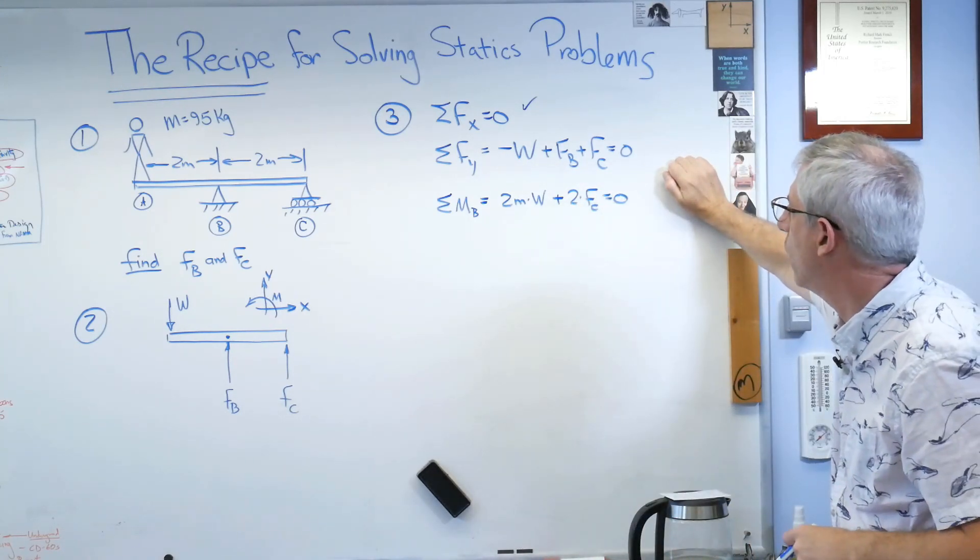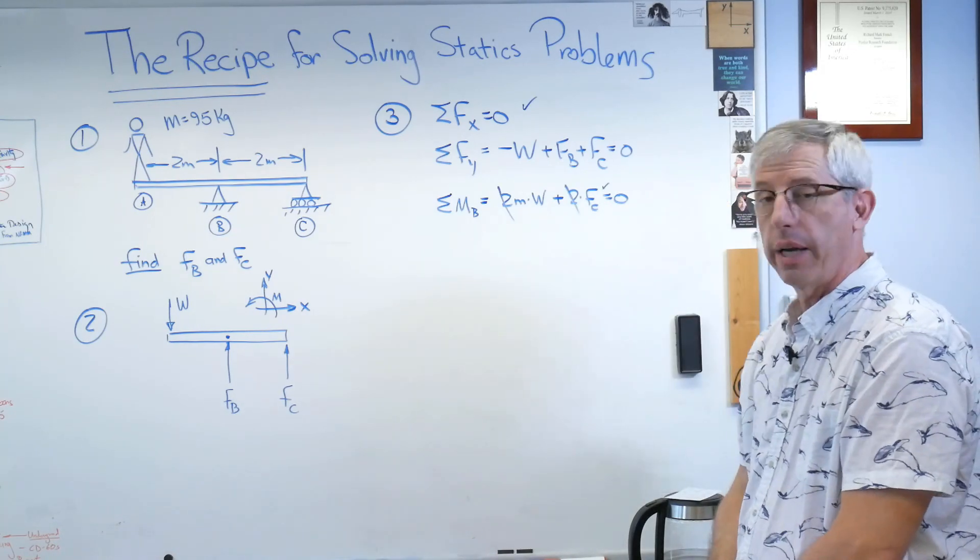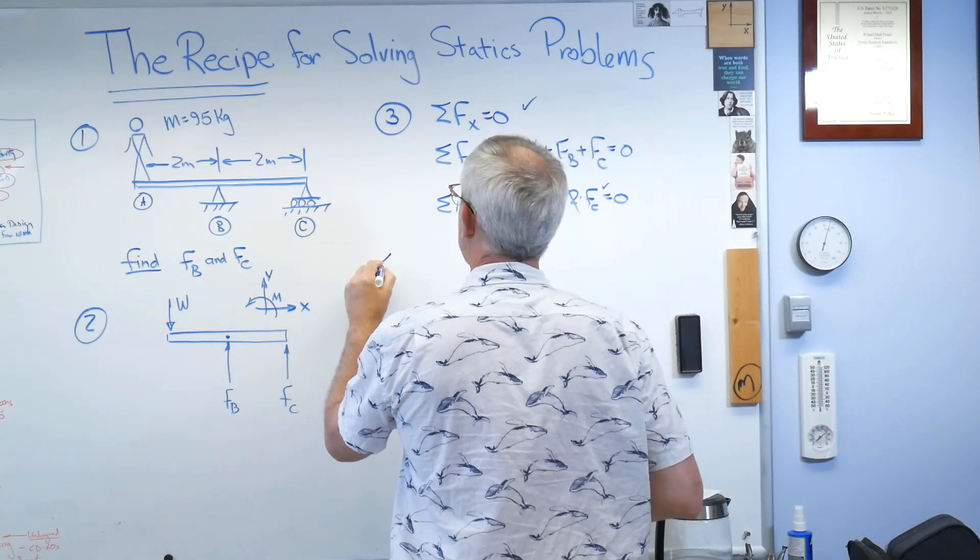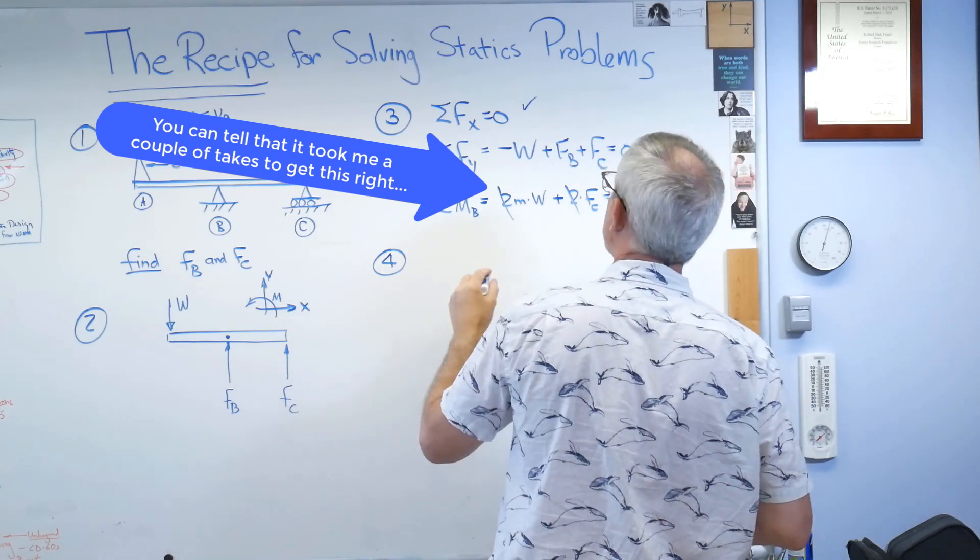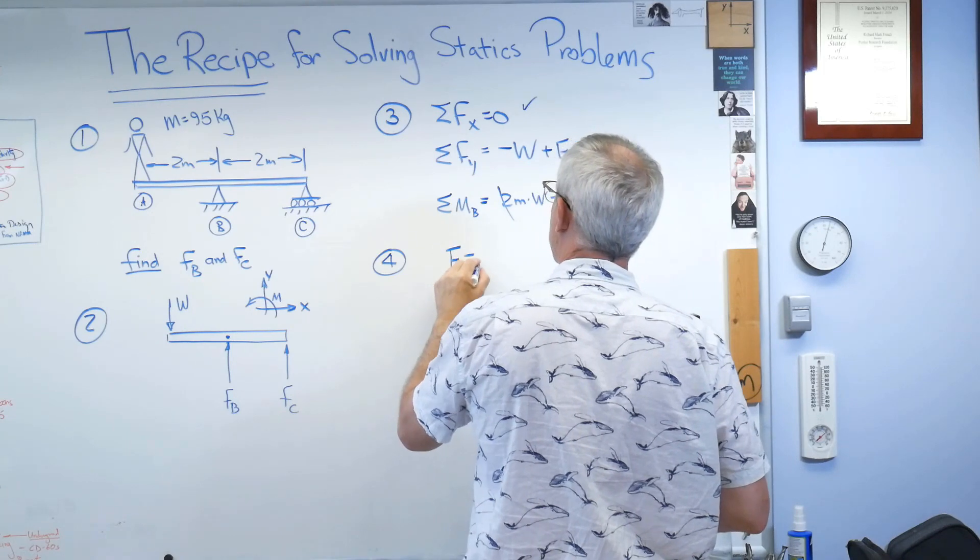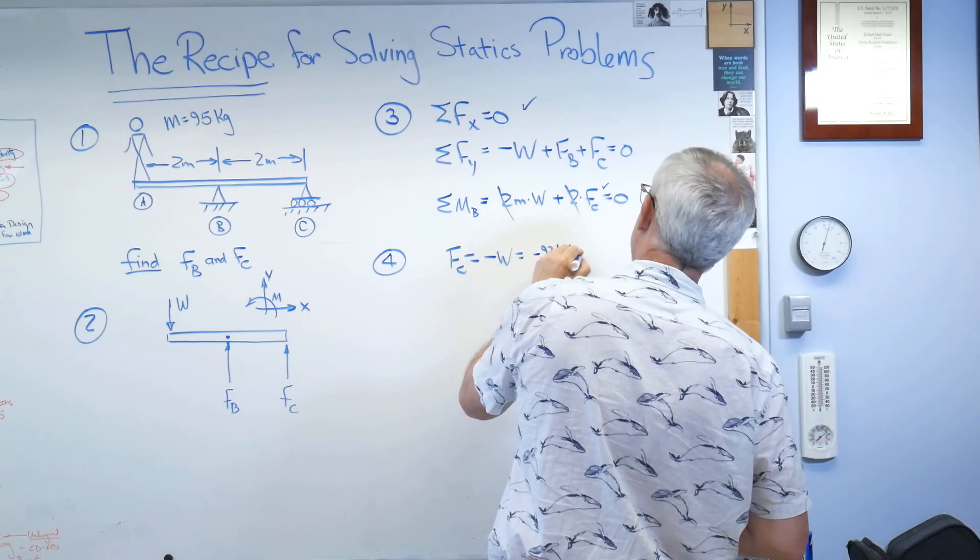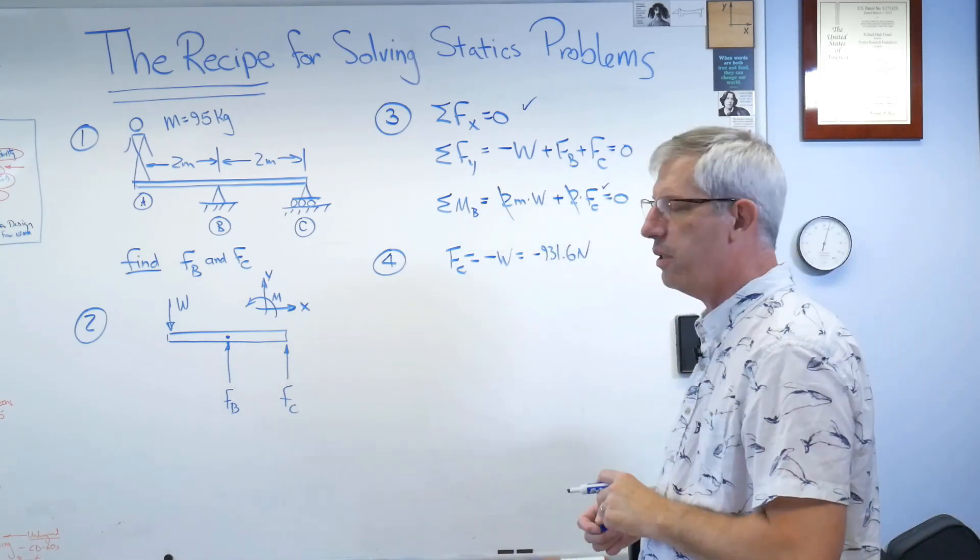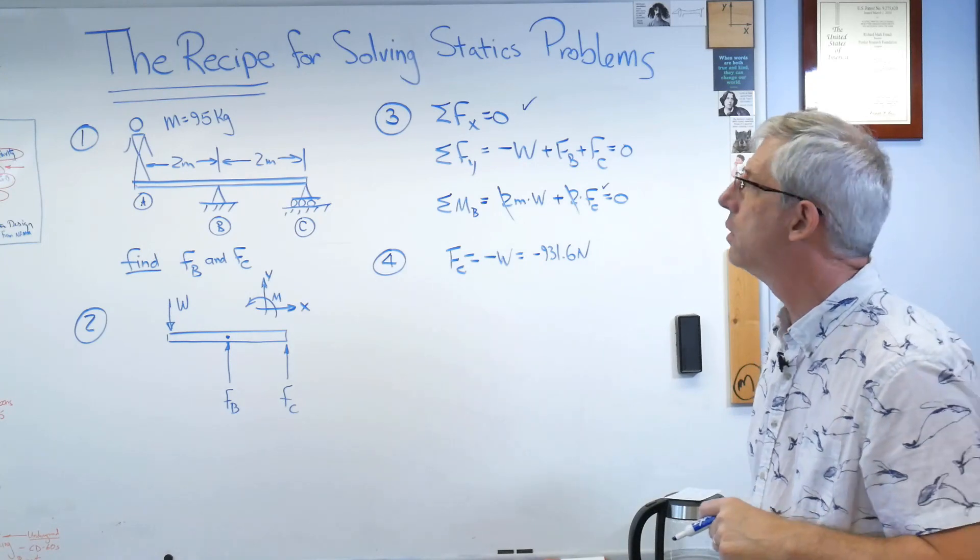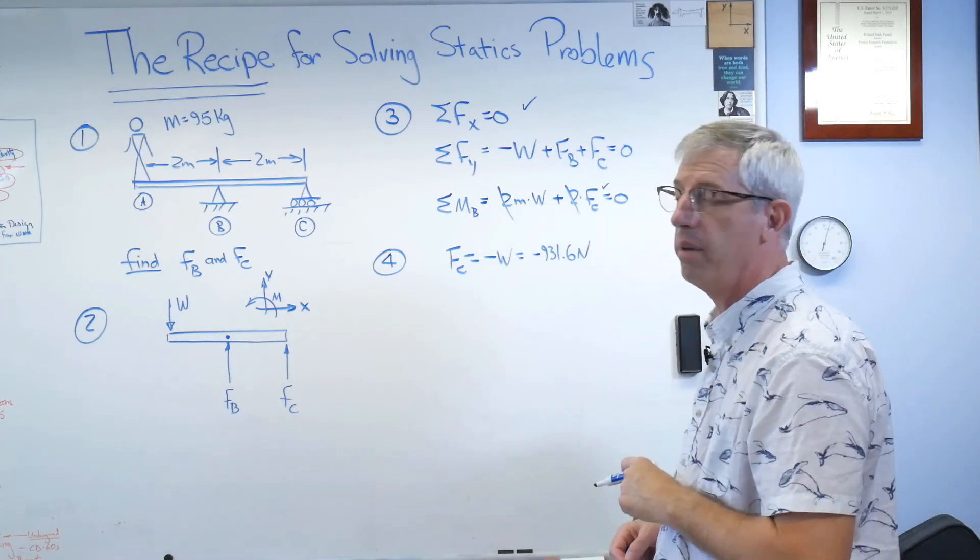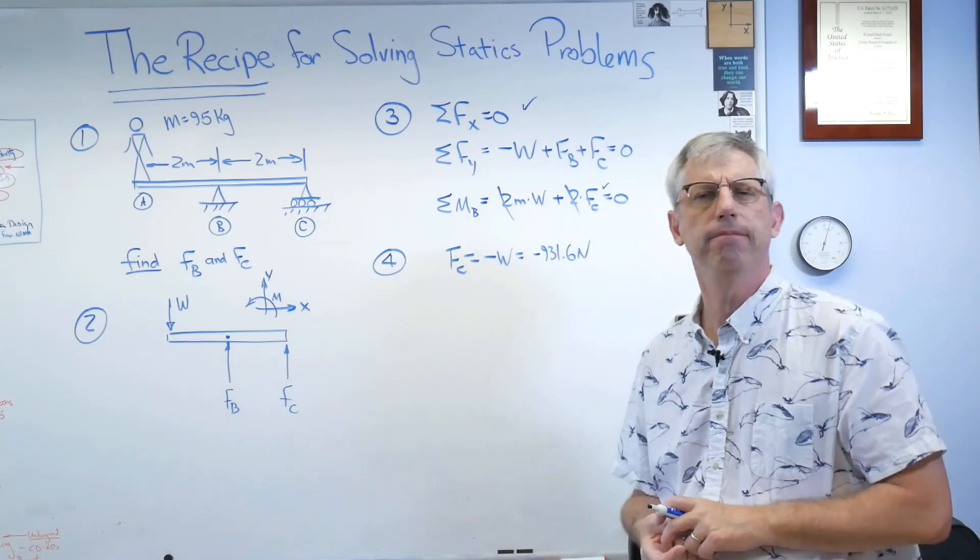All right. Now, let's see. One equation, one unknown. I bet I can solve for that. Okay. So let's start solving. And that's step four. So I'll solve that equation first. The twos cancel out. And Fc equals minus w. And that's minus, let's see, 931.6 newtons. And if you insist on doing it in English units of hogs head per cubic furlong or whatever it is, it works out to around 209 pounds. So that's the weight of an average engineering technology professor, I suppose. So that number is negative. What's that mean?